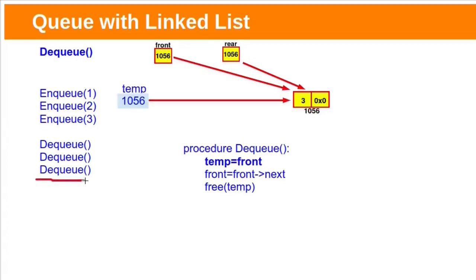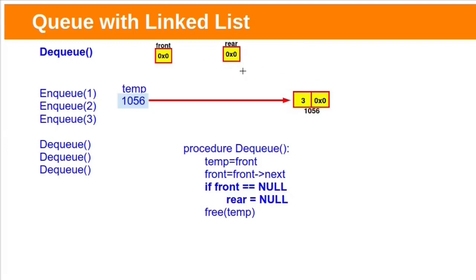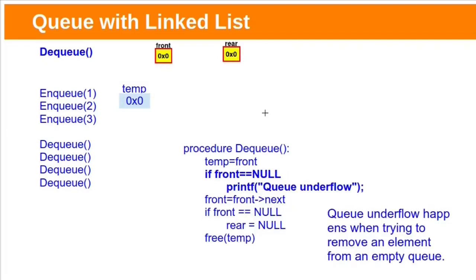Suppose if we perform one more dequeue. Store front in temp pointer, then advance the front pointer. Since only one node is present within our queue, front's next will be null. If we have a single node in queue and we delete that node, queue will be empty. So we need to set front and rear pointers to null. Then delete the last node. Now queue is empty. If we try to perform one more dequeue operation on an empty queue, underflow will happen, so we need to handle that.